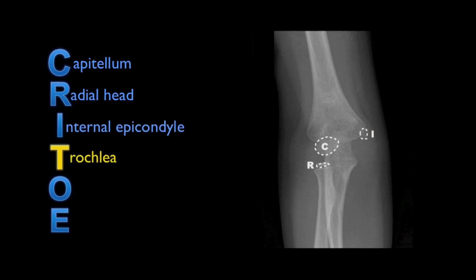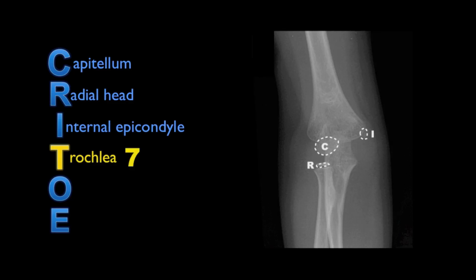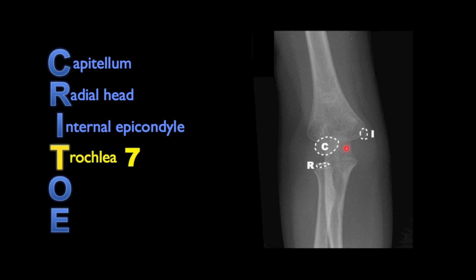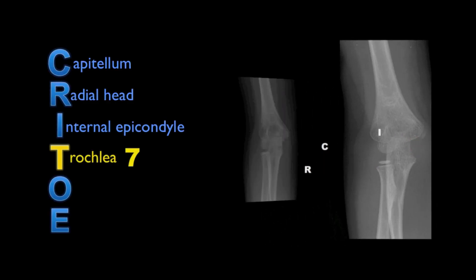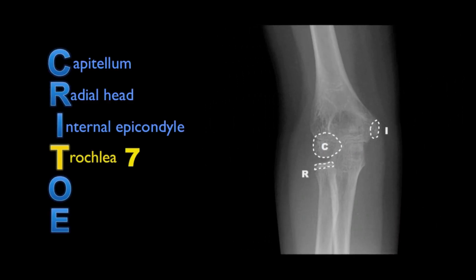The fourth ossification centre to appear is T, trochlea, appearing at around age 7. This child does not have it, so we'll switch to a slightly older child and you can see it here superimposed over the ulna.